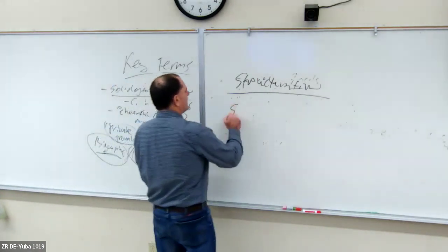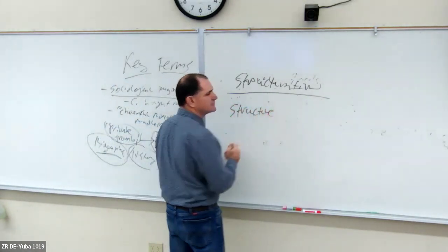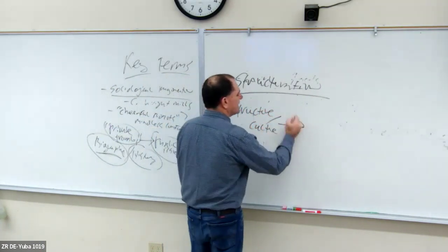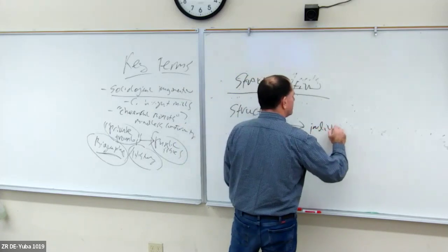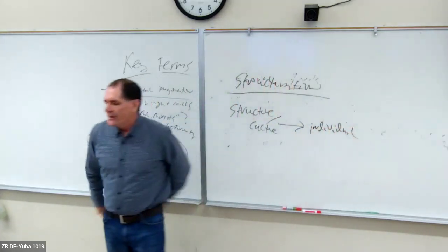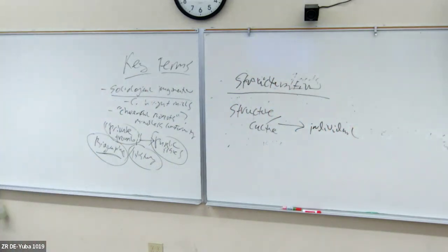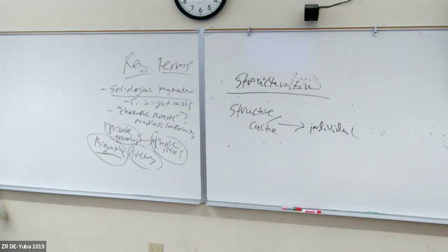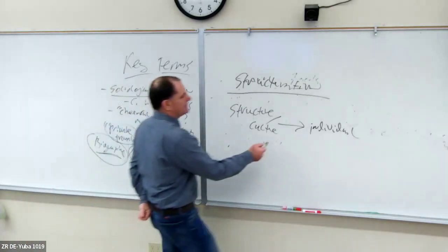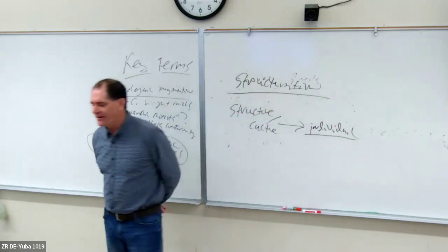The basic idea is that we as individuals are products of our social structure — and I'd include culture. Your society shapes you as an individual. Sociology kind of argues with mainstream American culture: we like to feel the individual gets to be whoever they want to be, that it's all up to you. But in sociology, we argue: no, as an individual you're a product of your society. You didn't just get to choose everything about who you are.